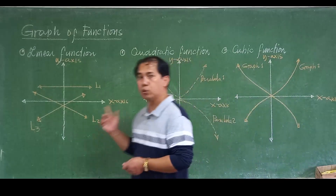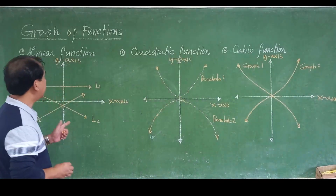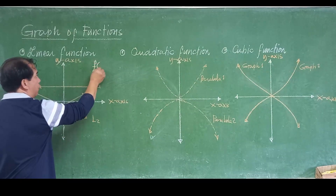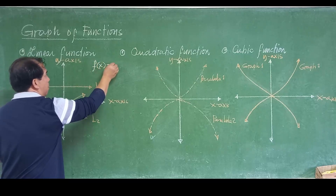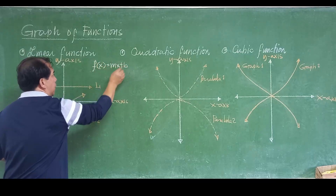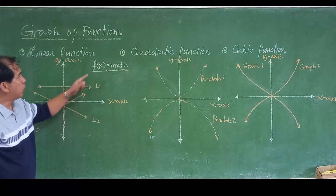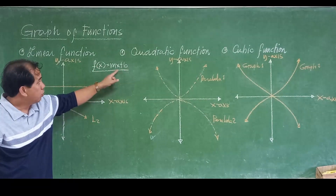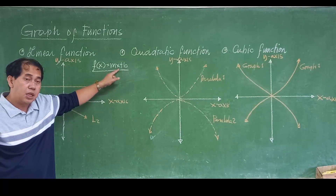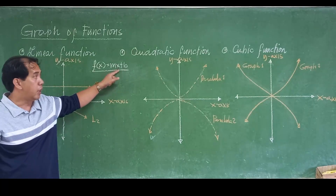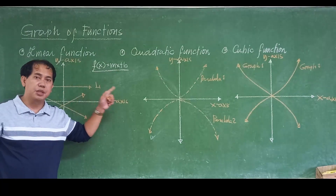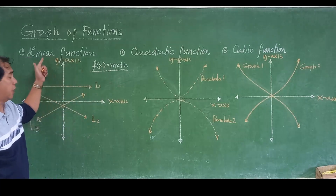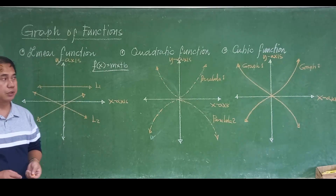The very first function we are going to look into is the linear function. The linear function is represented by f(x) = mx + b. Notice that the variable x is in the first degree. Meaning, if the function is in the first degree, our equation or function is considered to be a linear function.